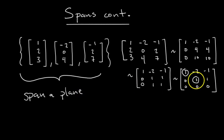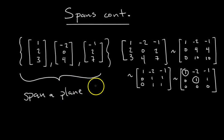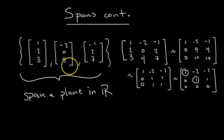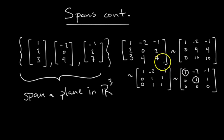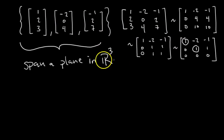The number of pivots is the dimension of the span, so two pivots means a two-dimensional span — that means a plane. The vectors in the span all have three components, so the span is in R³. But the dimension of the span is two-dimensional because we only found two pivots when we row reduced the matrix that has the vectors as the columns.